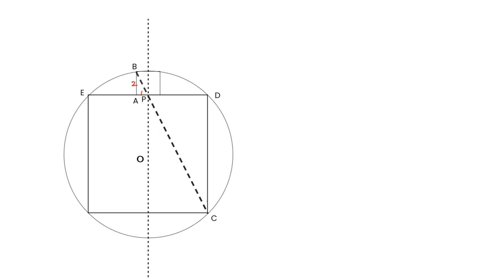We can get PA over AB is equal to 1 over 2. PD over DC is also equal to 1 over 2. Angle PAB equals angle PDC, all are right angles. So we can get triangle PAB is similar to triangle PDC.